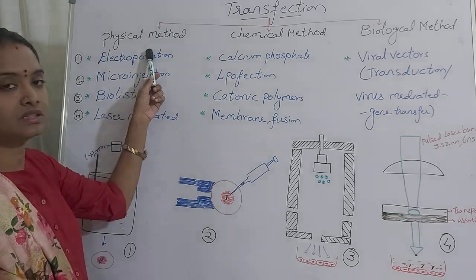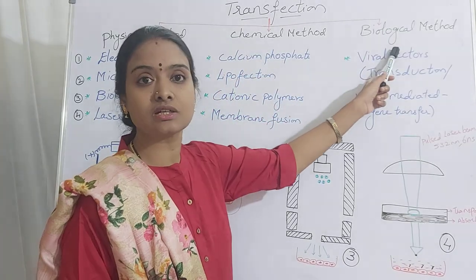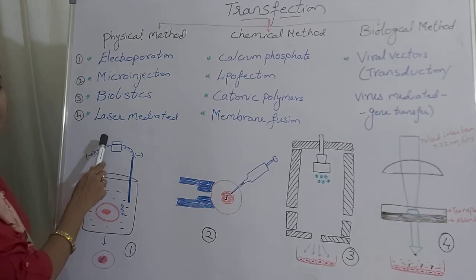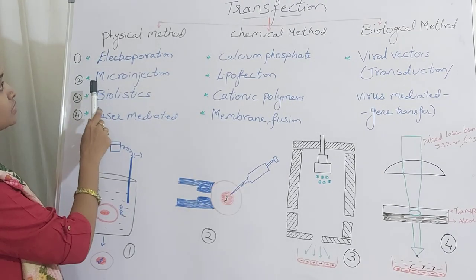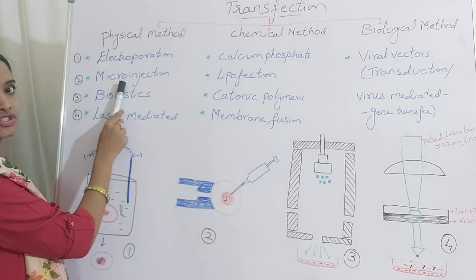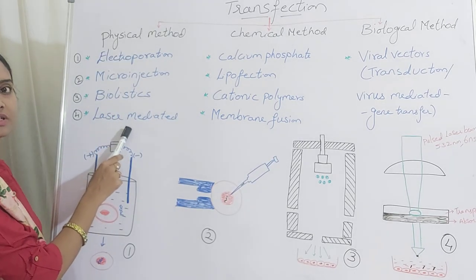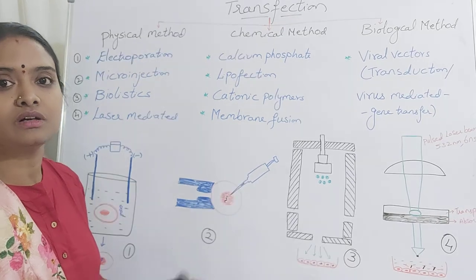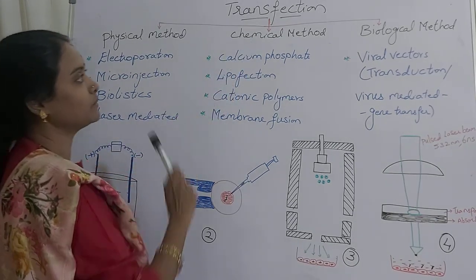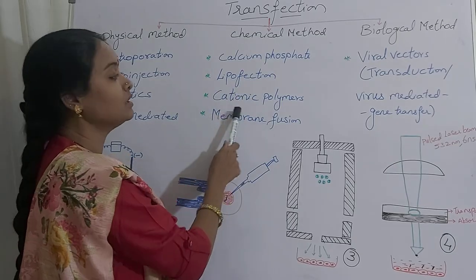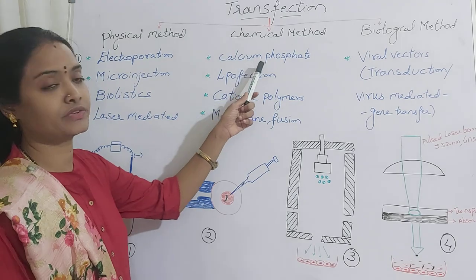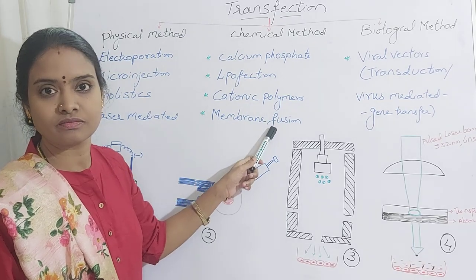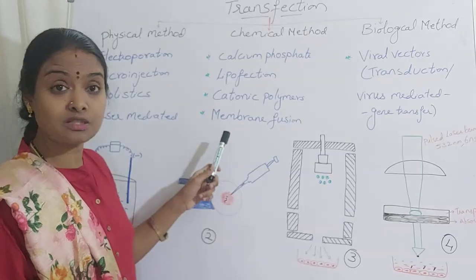The first type is the physical method, the second is the chemical method, and the third is the biological method of transfection. Under the physical method, there are four types widely used: electroporation, microinjection, biolistic, and laser mediated transfection. These are physical methods where you are not making use of any chemicals or any other organism. In the chemical method, you make use of certain chemicals — calcium phosphate precipitation, lipofection, cation polymers, and membrane fusion.